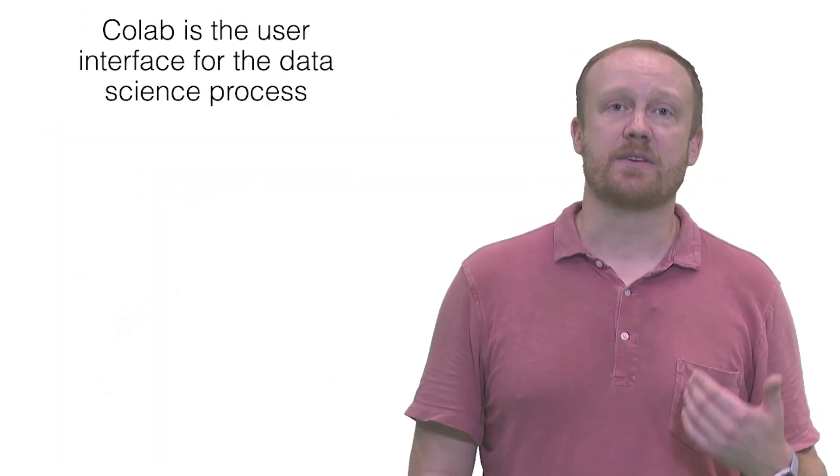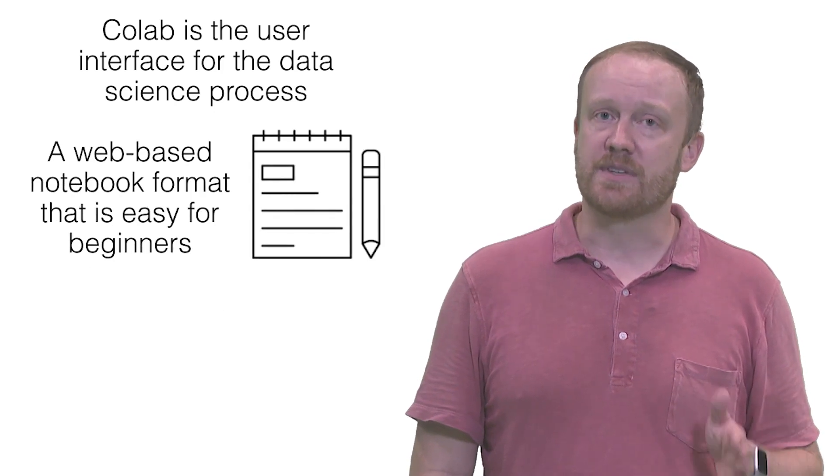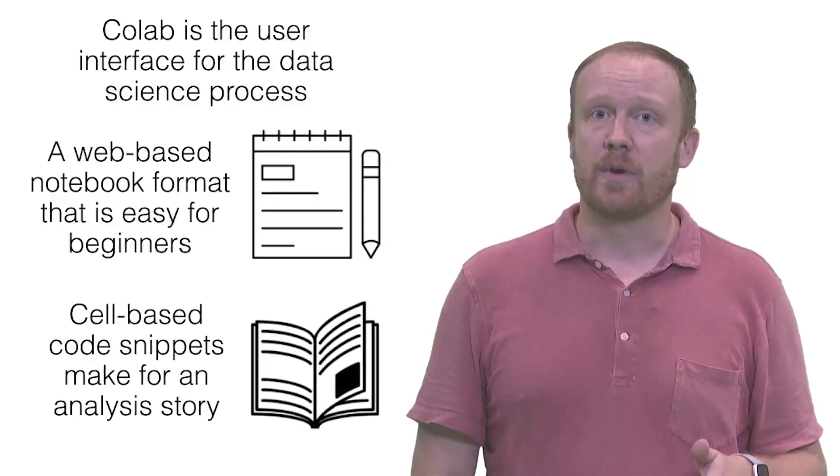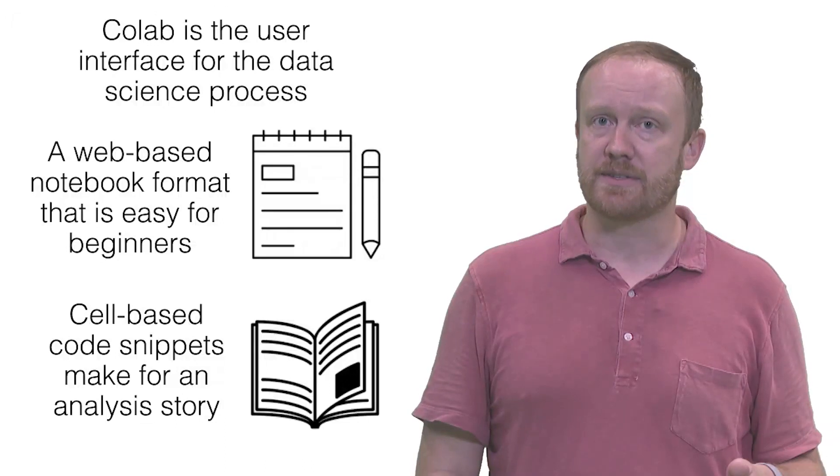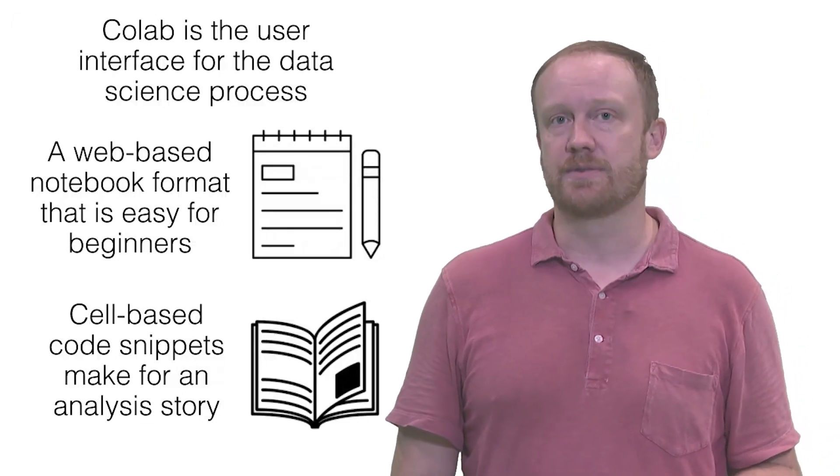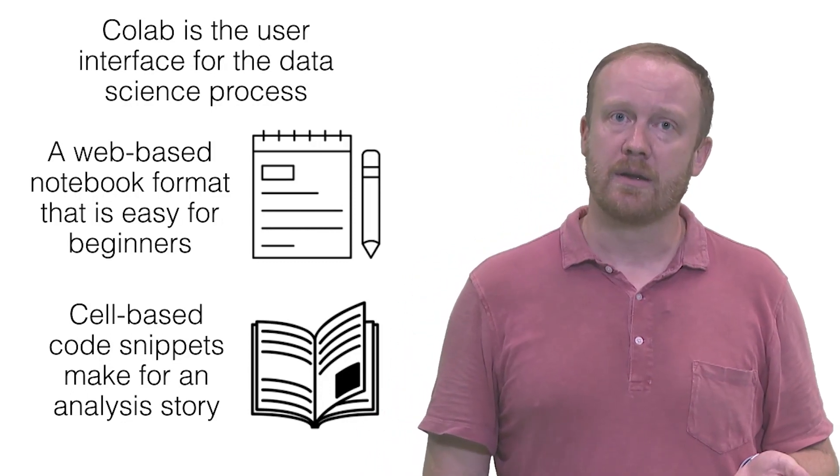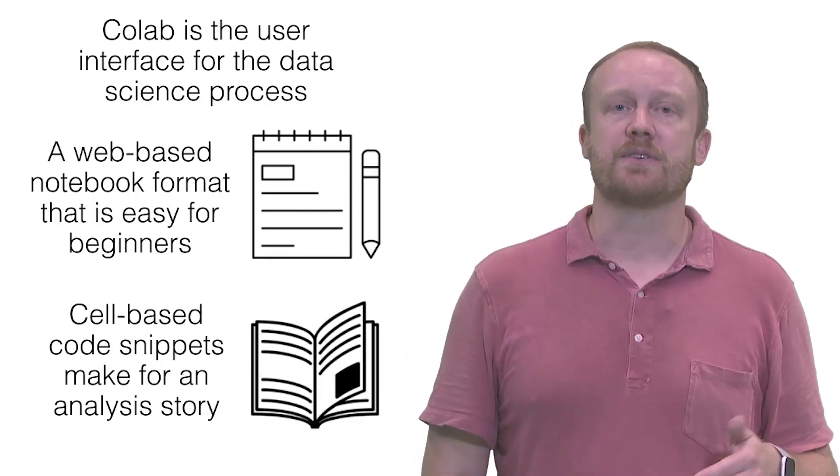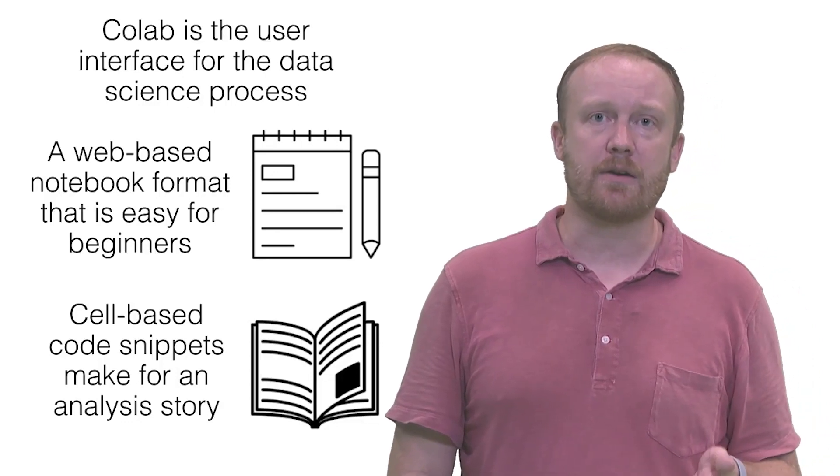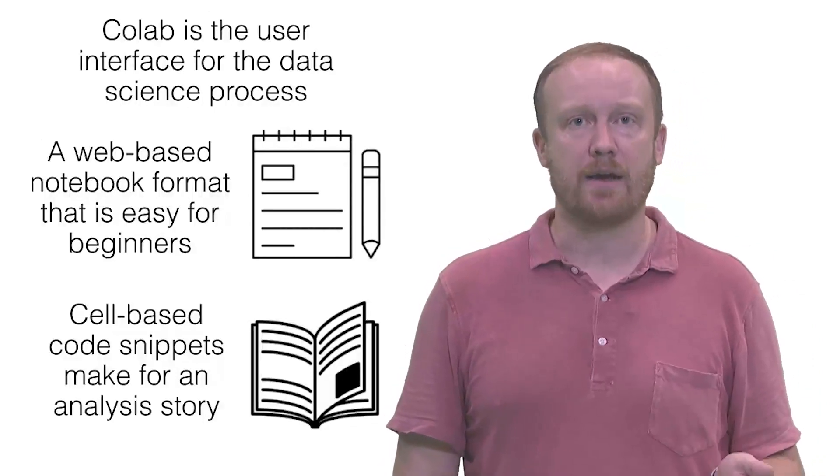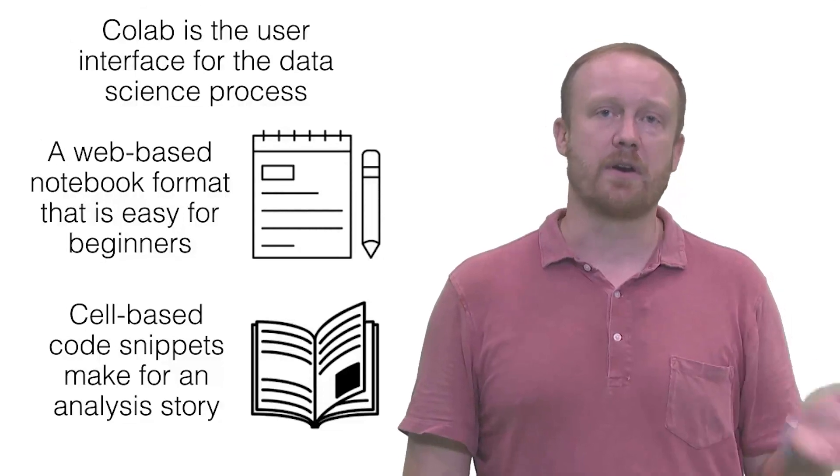CoLab is what's known as a notebook format that includes cells that can contain code, but can also include explanatory text, graphics, and even videos. The notebook format is best for beginners to write and debug code. Plus, you can make your notebooks into reproducible reports that allow collaborators to see exactly how the data was transformed from start to finish.